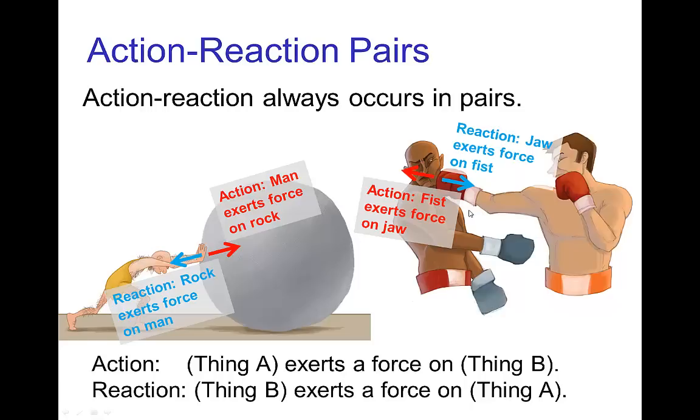So in this example, if we think of the fist of the boxer exerting a force on the jaw, if that's the action, then there is a reaction which is a force exerted by the jaw on the fist. So we always have this type of pairing of action and reaction forces.